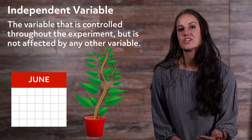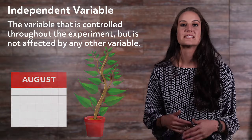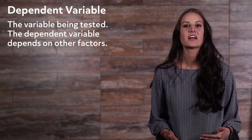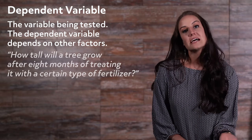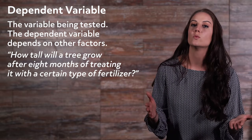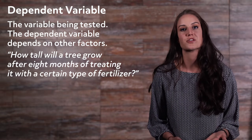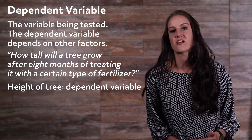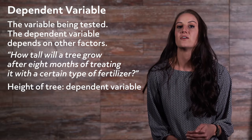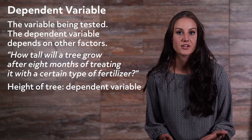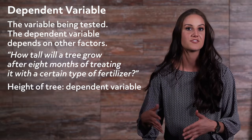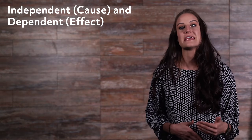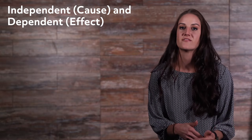However, you can change the amount of time you are measuring something. The dependent variable is the variable being tested. The dependent variable depends on other factors. In our last example, we said how tall will a tree grow after 8 months of treating it with a certain type of fertilizer? Well, the height of the tree is our dependent variable. It is dependent on the amount of time, the type of fertilizer, as well as other things like the region it is growing in, temperature, and so on.